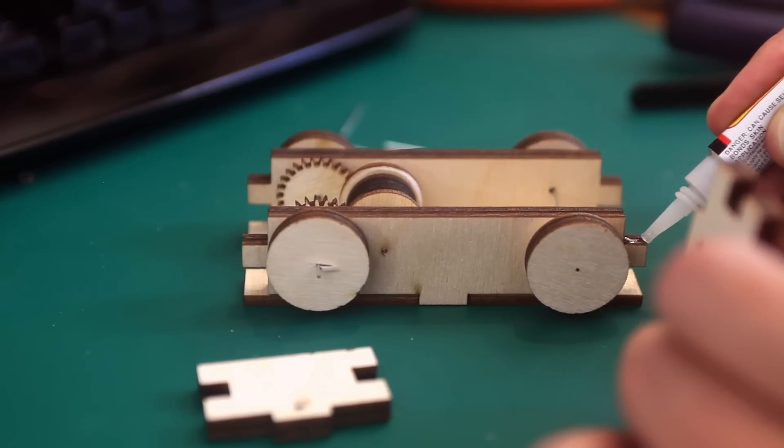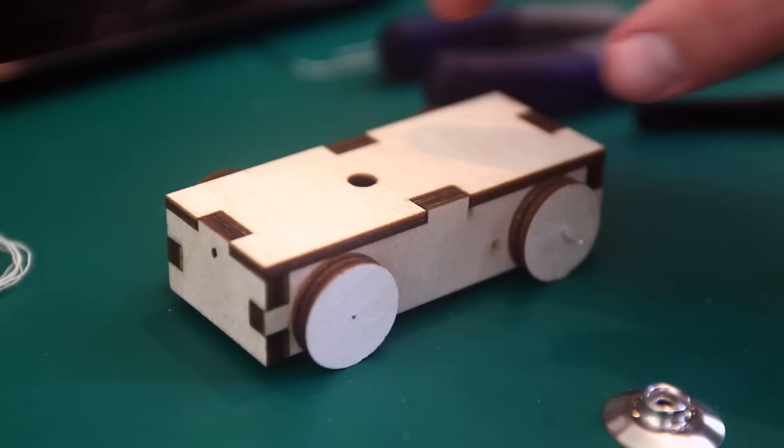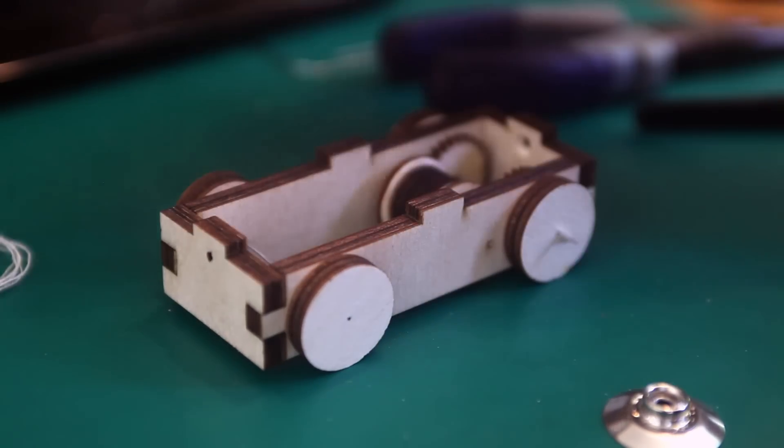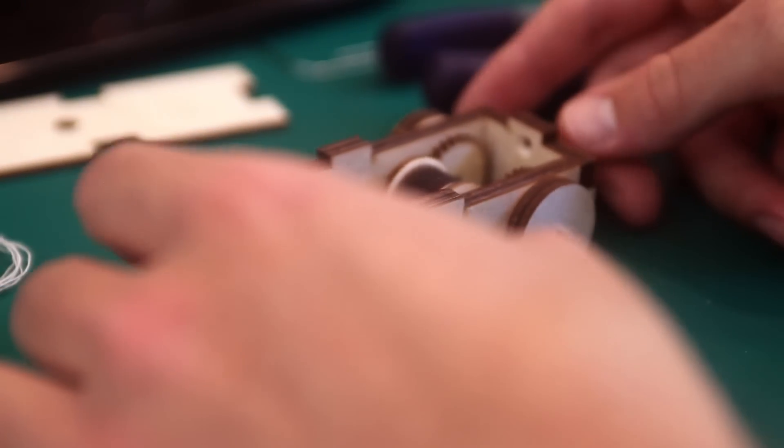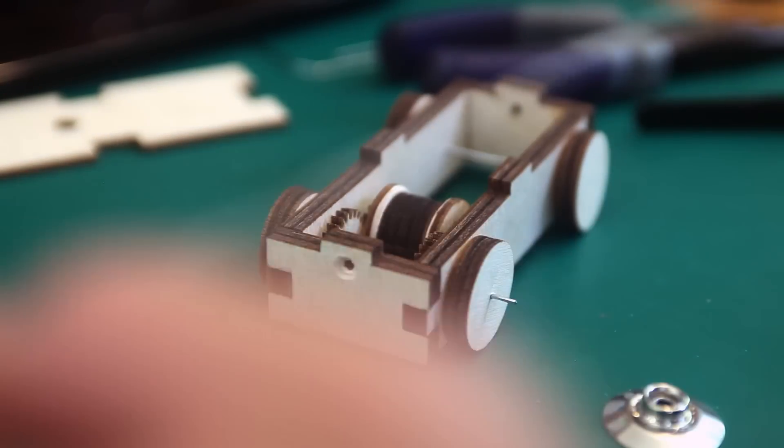Now I'm going to glue the four side pieces together using some super glue. Now that the super glue is dry-ish, I'm going to take the top off and we're going to put the string through the front hole.